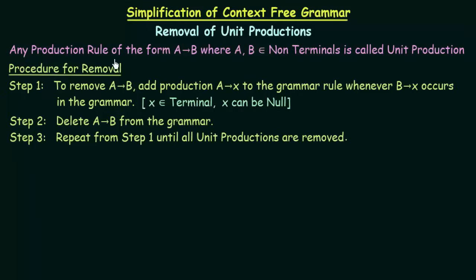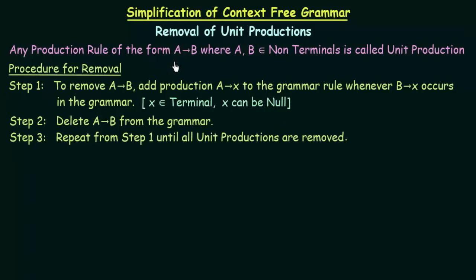Any production rule of the form A gives B, where A and B both belong to non-terminal symbols, is called a unit production. So if you have a production rule of the form A gives B and both A and B are non-terminal symbols, that is called a unit production. Now we want to remove these unit productions from our CFG in order to simplify it.